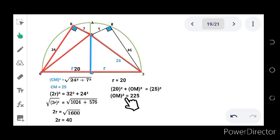Doing some calculations, we can come up with OM squared equals 225. Finally, getting the square root of OM squared and the square root of 225, we come up with OM equals 15, and that is our answer.